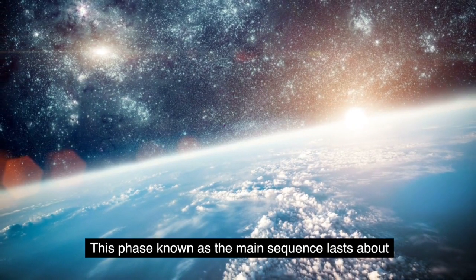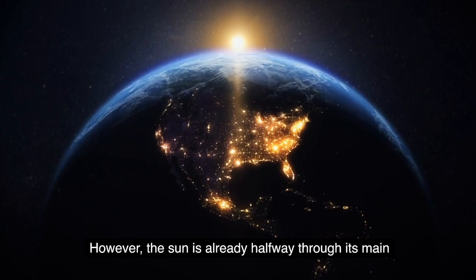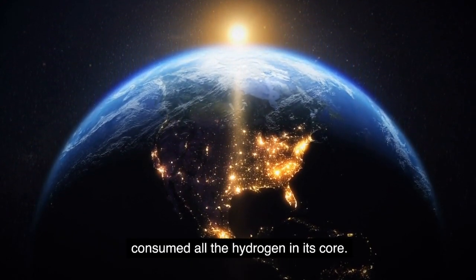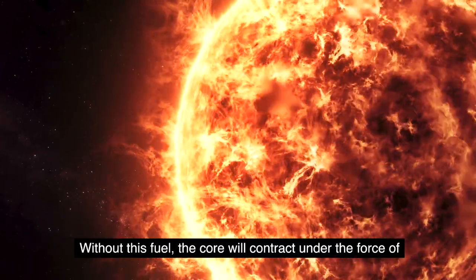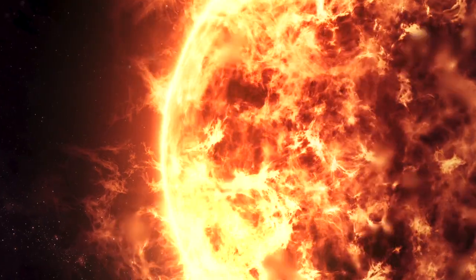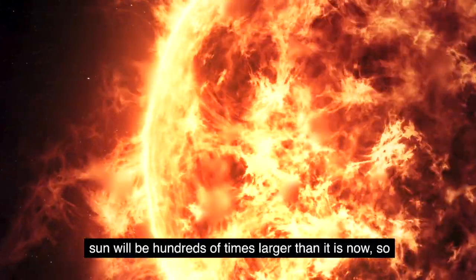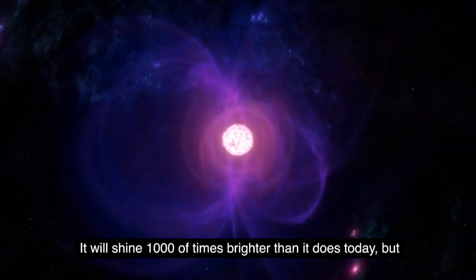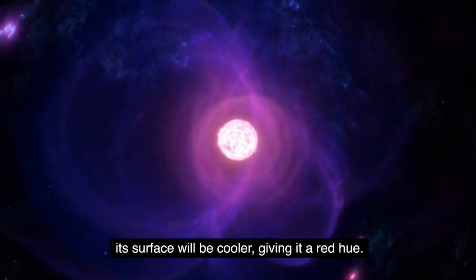This phase, known as the main sequence, lasts about 10 billion years for a star of the sun's mass. However, the sun is already halfway through its main sequence phase. In about 5 billion years, it will have consumed all the hydrogen in its core. Without this fuel, the core will contract under the force of gravity, causing the outer layers of the sun to expand. The sun will then, become a red giant. As a red giant, the sun will be hundreds of times larger than it is now, so large that it will swallow Mercury and Venus and possibly even Earth. It will shine thousands of times brighter than it does today, but its surface will be cooler, giving it a red hue.